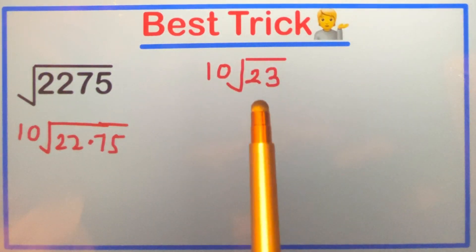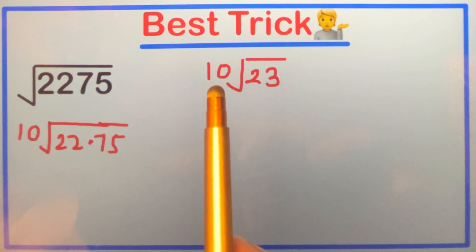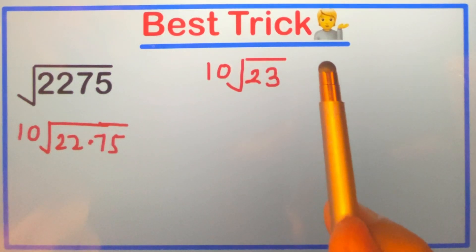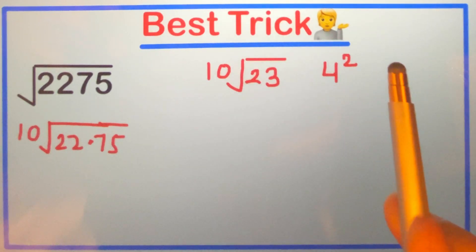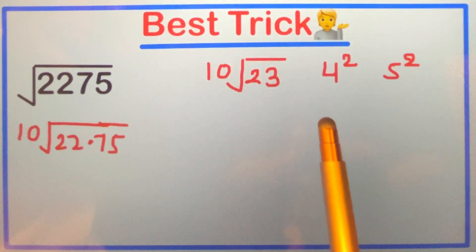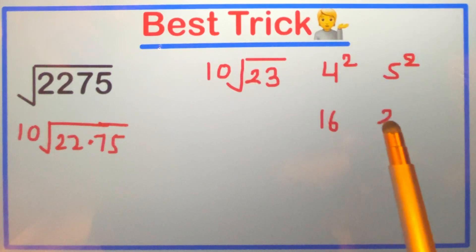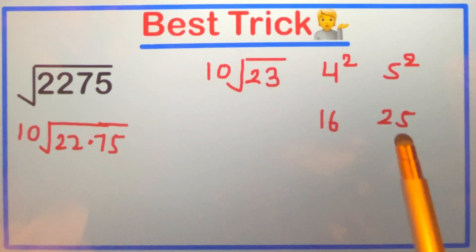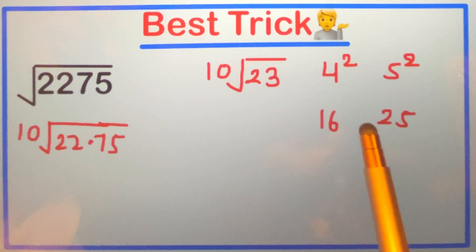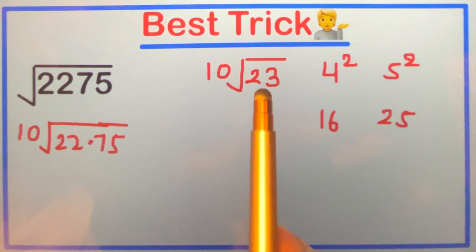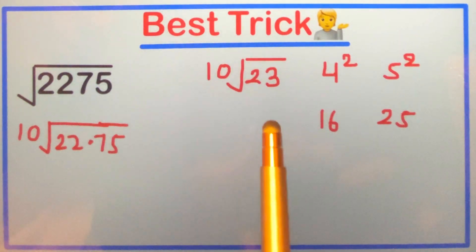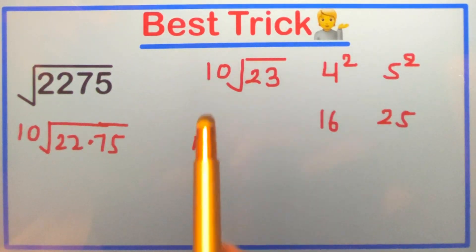Now we just have to get the value of √23 and multiply it by 10 to get our answer. We know that 23 falls between 4² and 5², because 4² is 16 and 5² is 25. So 23 is somewhere between these two numbers.